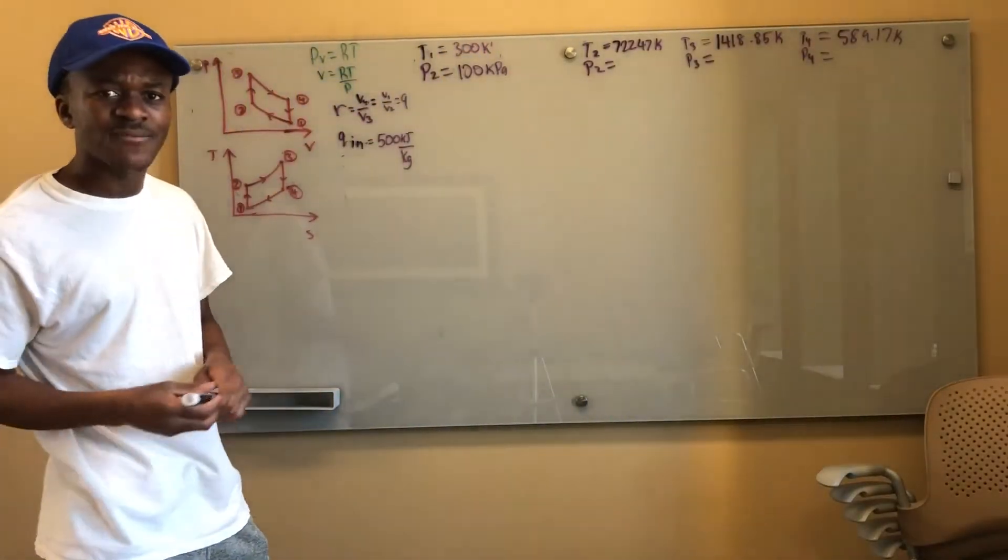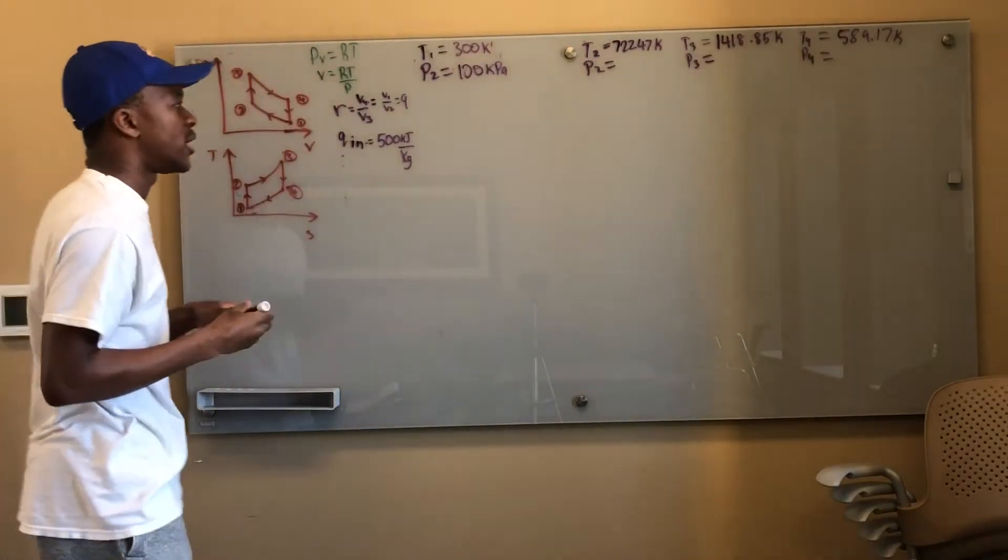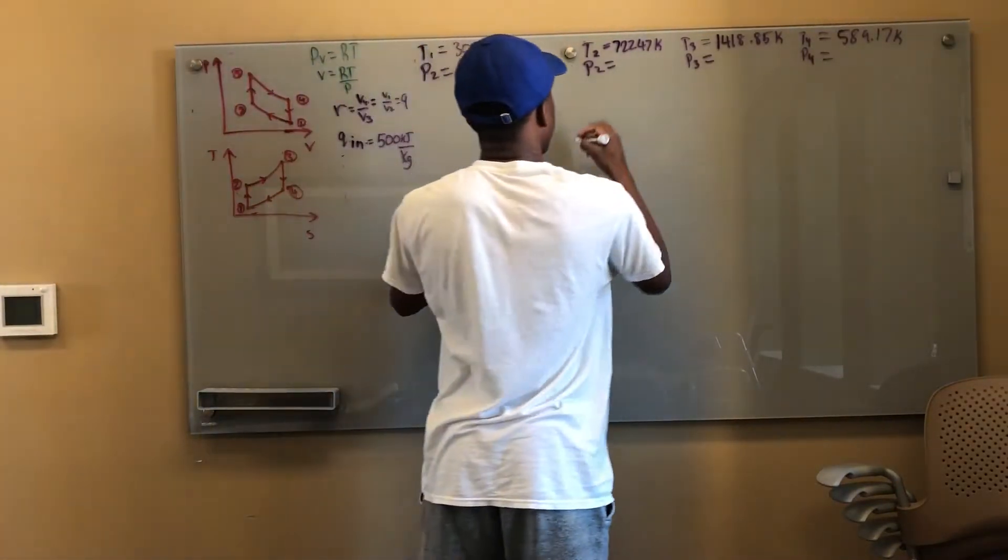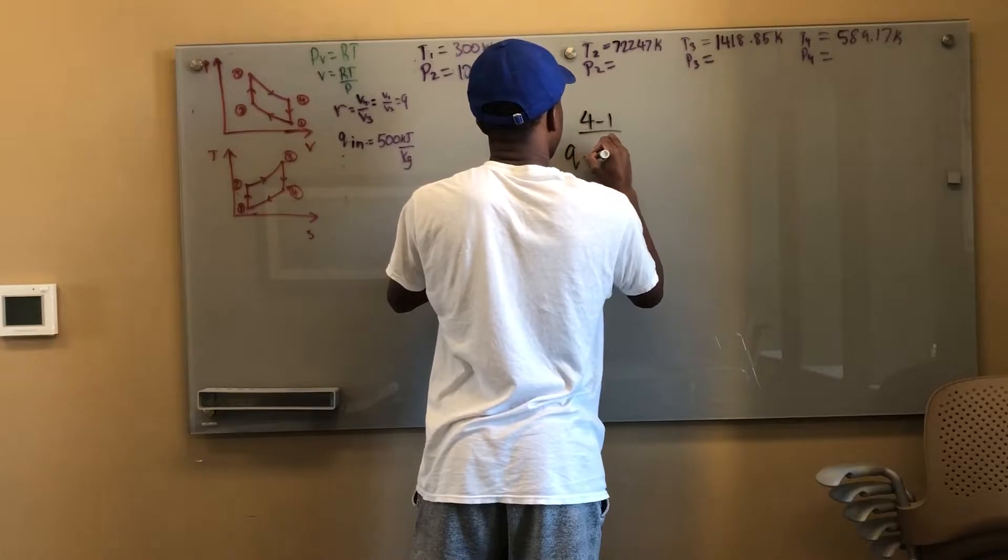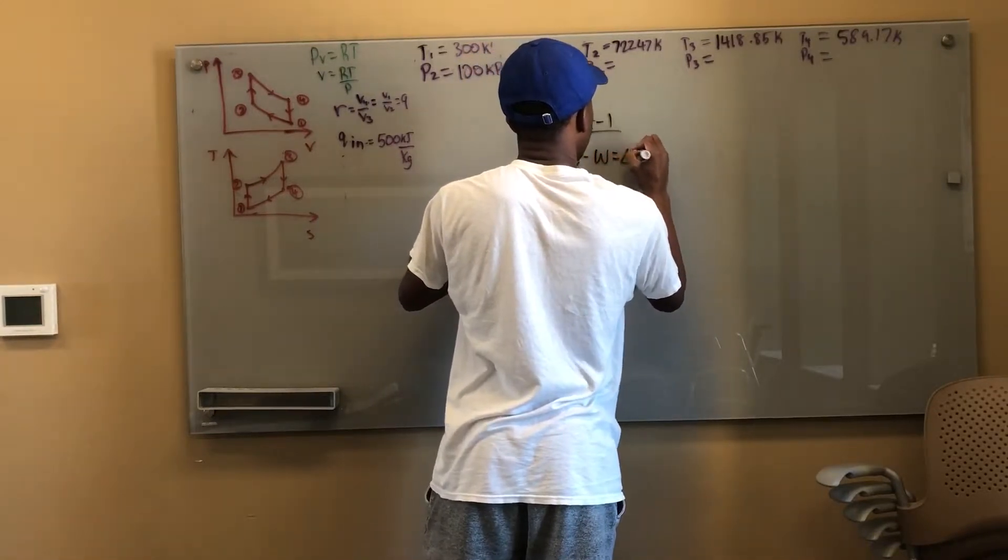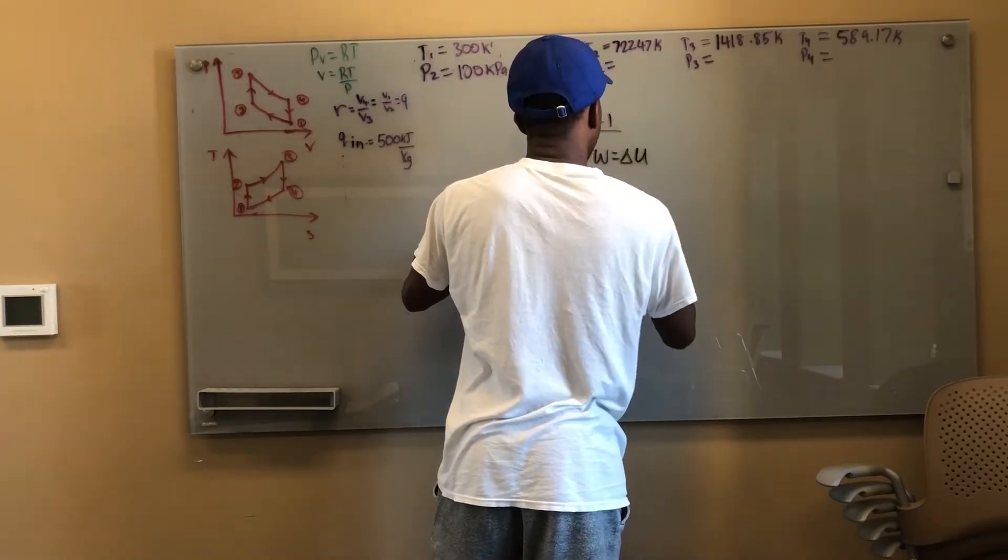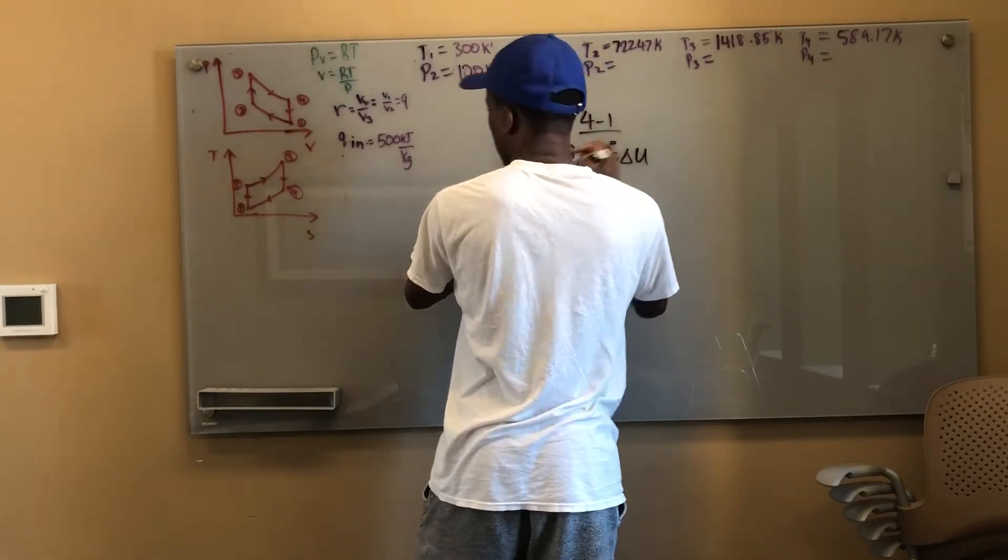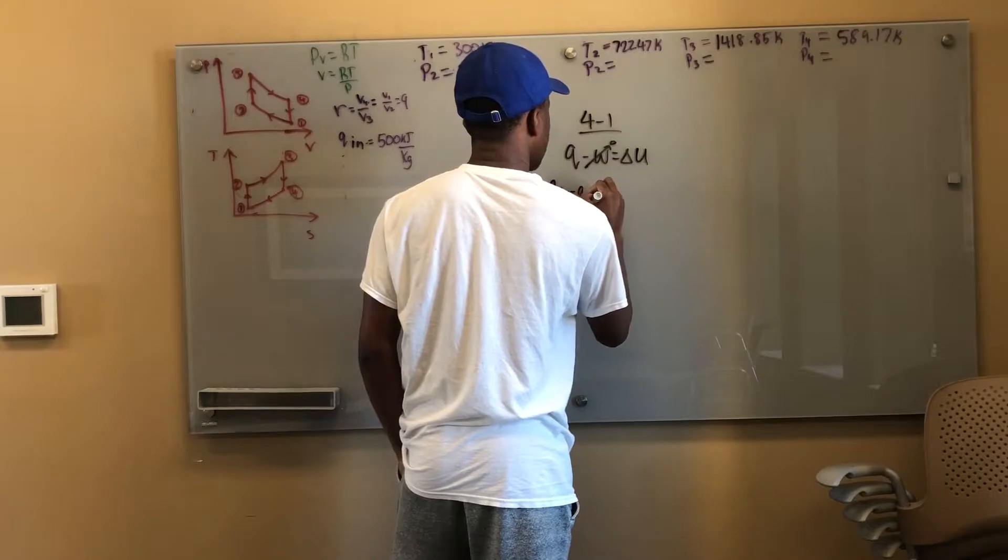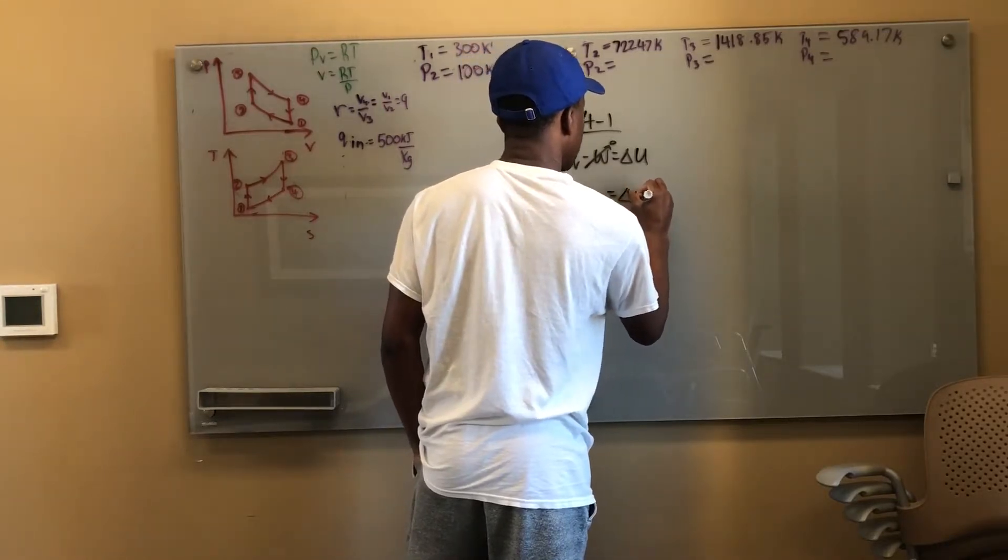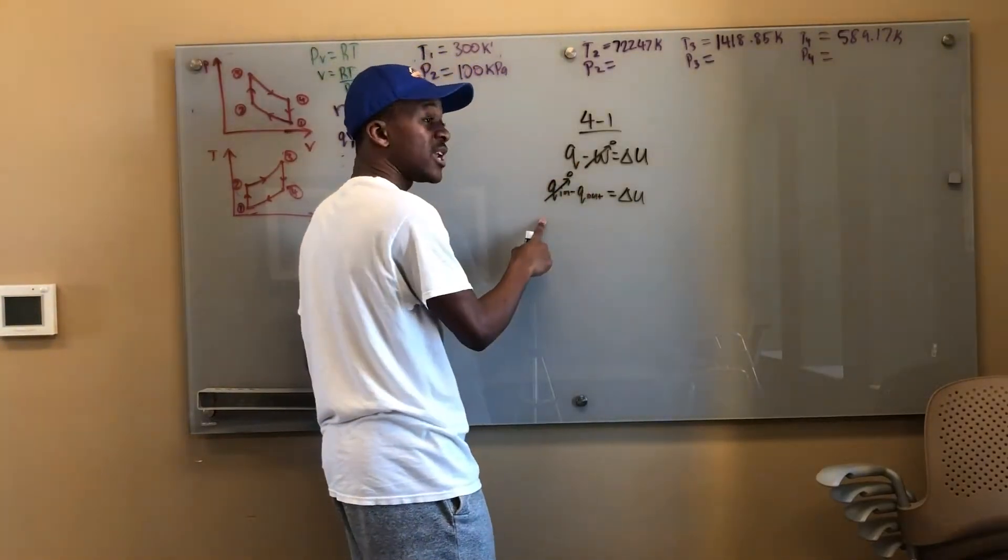Remember how I said my delta U is just my U_final minus U_initial. If my U_final and my U_initial are the same, delta U is zero. So Q minus W equals delta U, but this whole thing goes to zero. That means that for this I can say the Q, because this is Q_net, is equal to W which is W_net. So that's just what I'm trying to point out. For the net work it's just my net heat also.